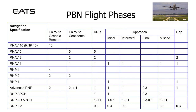PBN Flight Phases: There are various containment levels for each phase of flight under PBN. For example, RNAV10 requires 10 nautical miles en route in oceanic and remote areas, whereas RNAV5 requires 5 nautical miles en route in continental airspace or in the arrival, and so on.